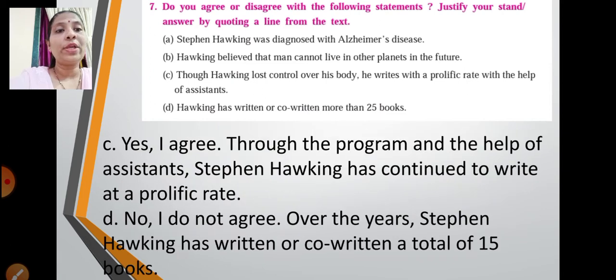Next one: though Hawking lost control over his body, he writes with a prolific rate with the help of assistance. So here yes, we saw that a program was introduced for him where he could use that program and write at a prolific rate with the help of his assistance. So yes, I agree. Through the program and help of assistance, Stephen Hawking has continued to write at a prolific rate.